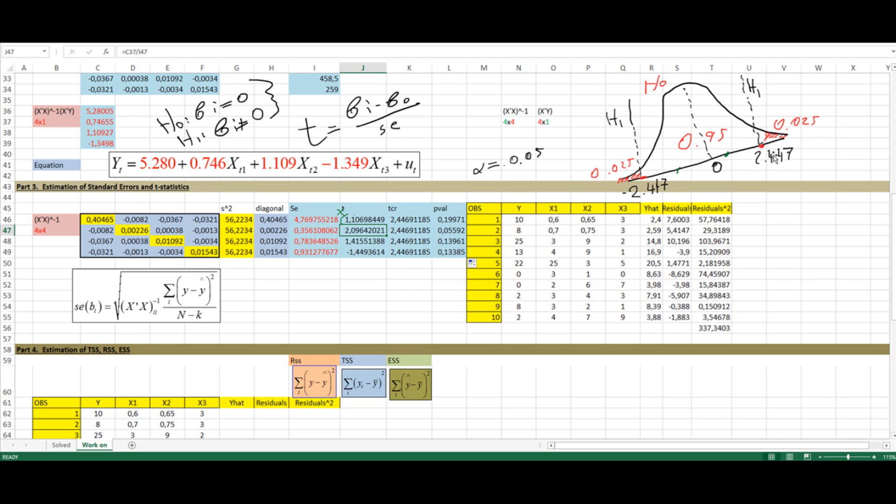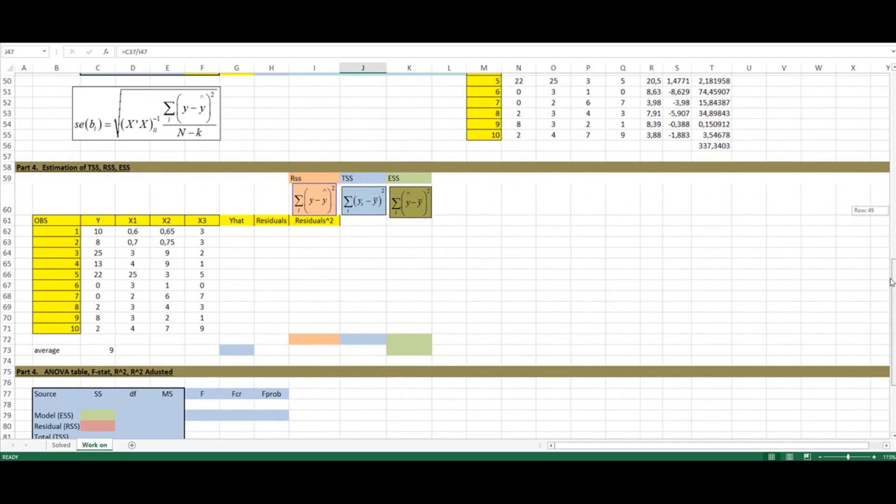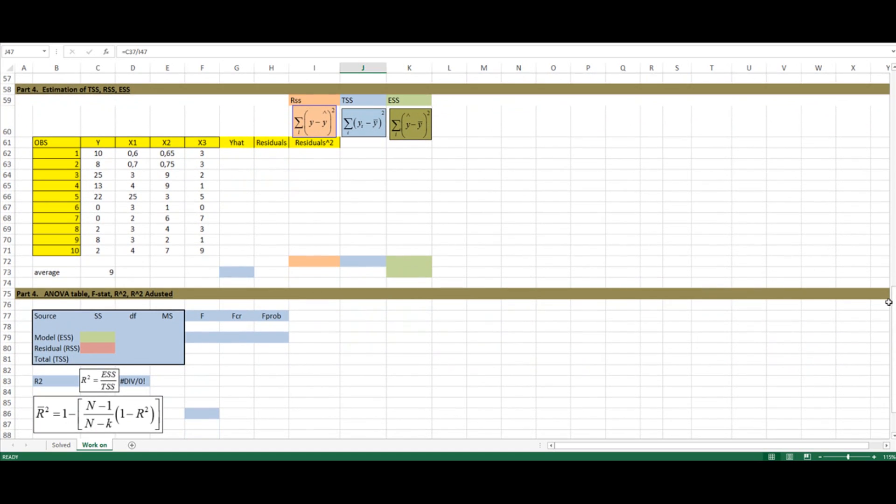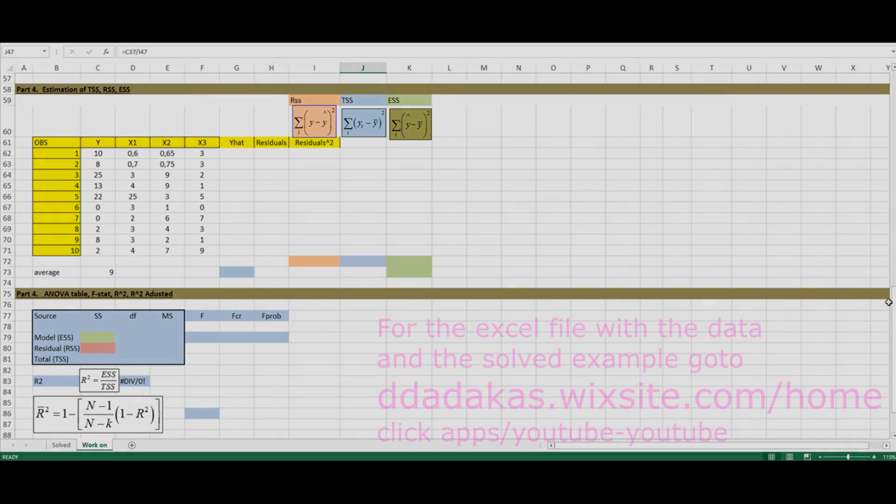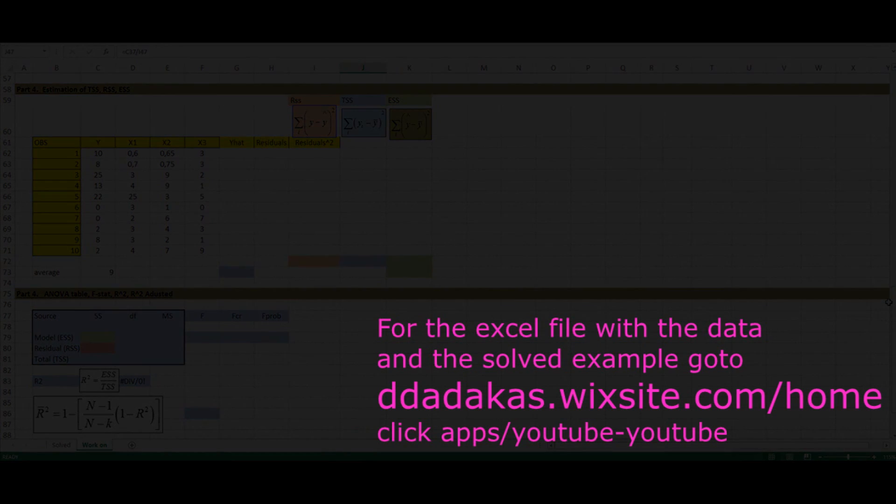Alright, so this concludes the second video, where we have estimated the standard errors and the t-statistics. We still have to go to the next part, where we will be estimating the total sum of squares, the residual sum of squares, and the estimated sum of squares, so that we can complete the ANOVA table, the R-squared, and the F-statistics for analysis, before we move on to replicating our results using the econometric software, Stata and SAS.